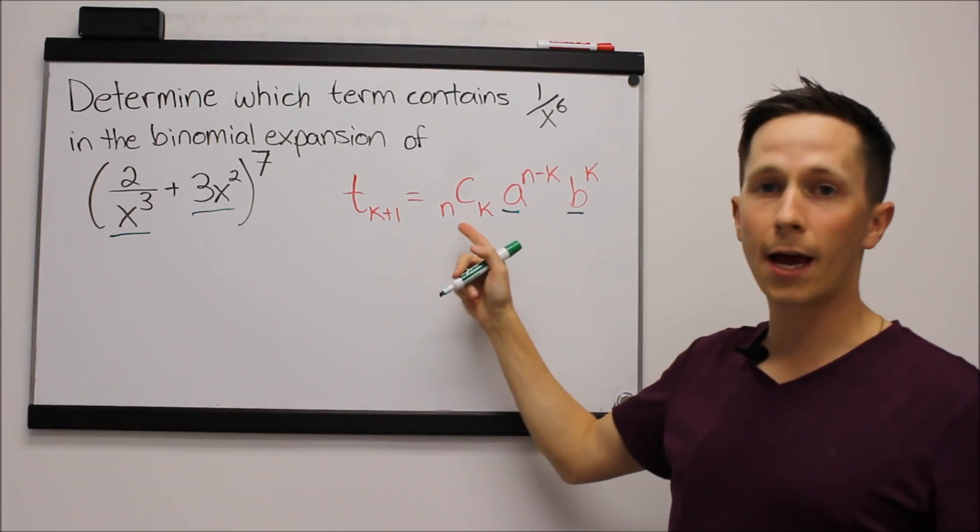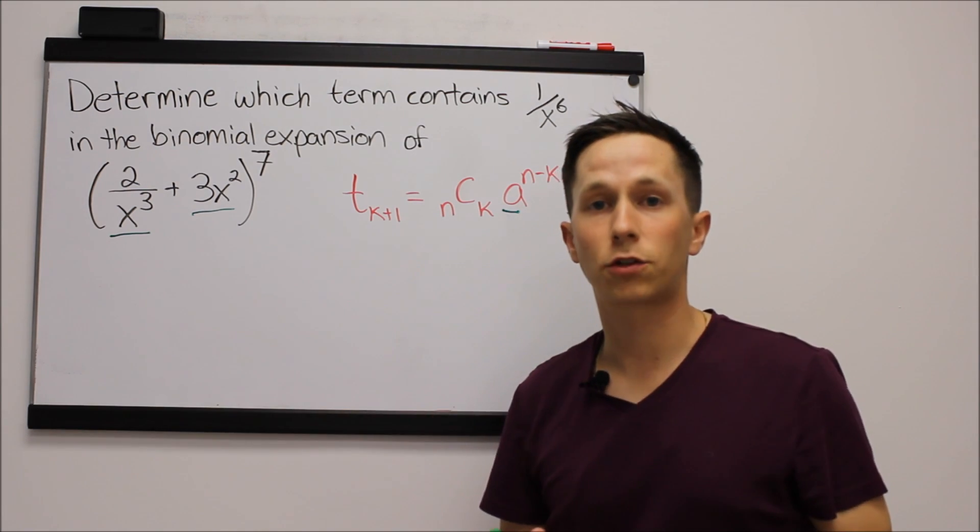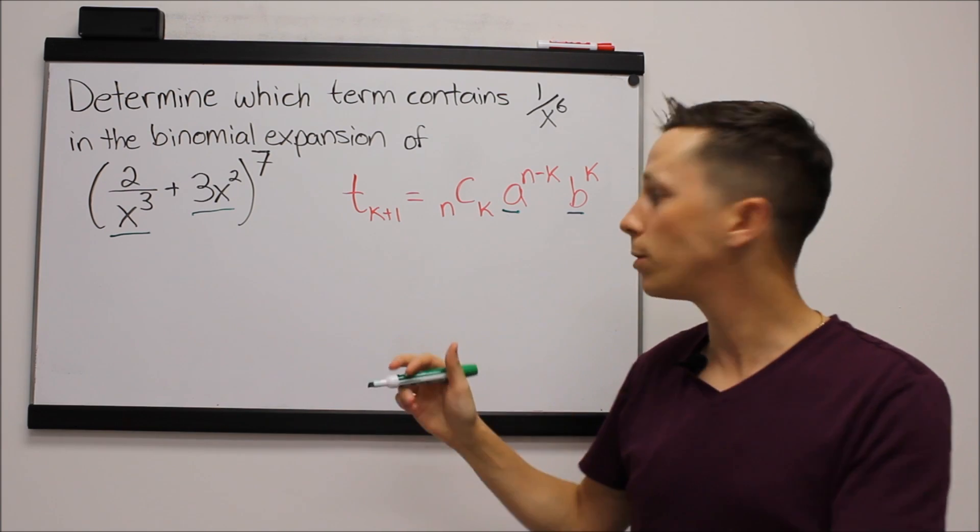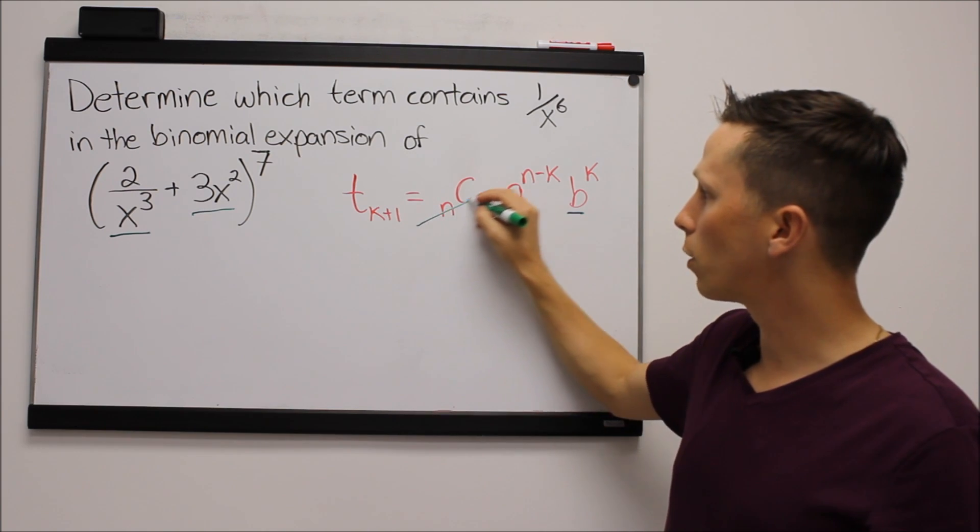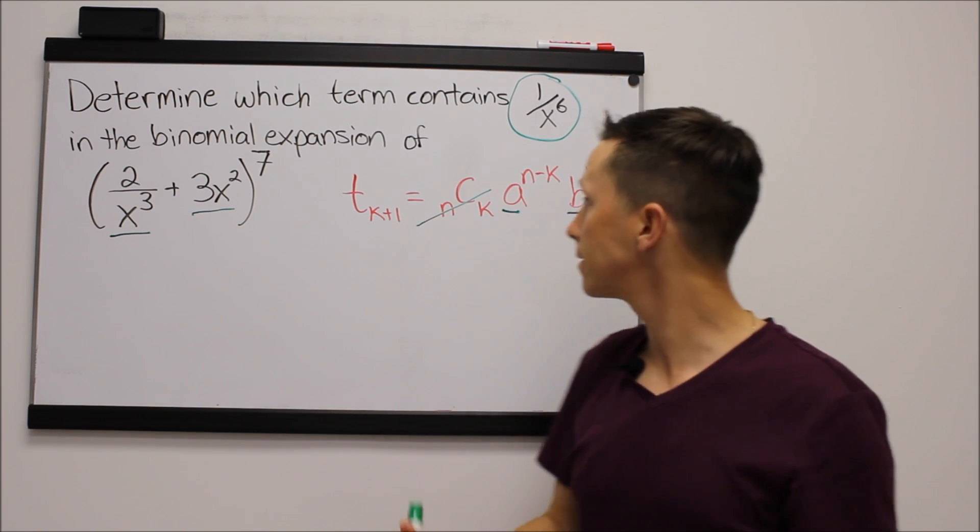Now this n choose k has to do with Pascal's triangle and it will only give you an integer value. There's no variables associated there, so we're not even going to worry about that because all we care about is our actual x term and the exponent on that x.